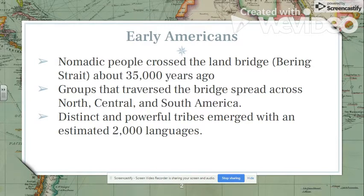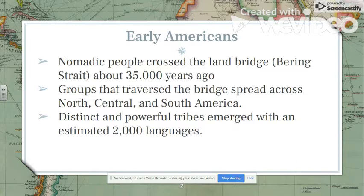Before Christopher Columbus or any European sets foot on North America, Central America, or South America, there were obviously human beings there. Most historians agree that people crossed from Asia into North America using the Bering Strait. This was possible because during the Ice Age, there was far less seawater, and so there was a land bridge which allowed people to traverse the Bering Strait and enter North America.